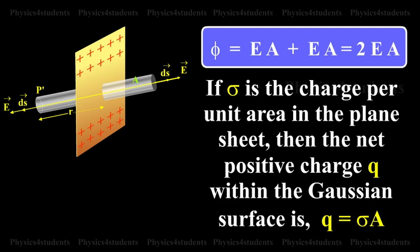If sigma is the charge per unit area in the plane sheet, then the net positive charge Q within the Gaussian surface is Q equals sigma A.